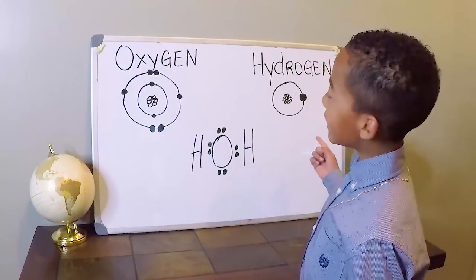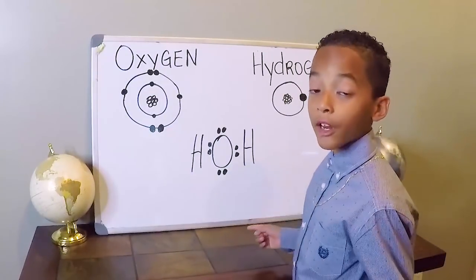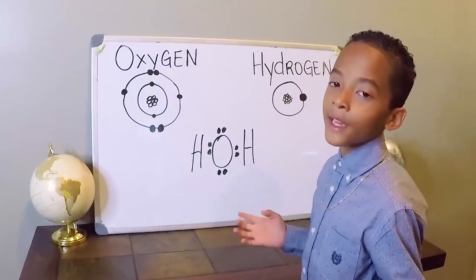Let's look at this hydrogen atom. It has one valence electron but it needs one more to make a bond.